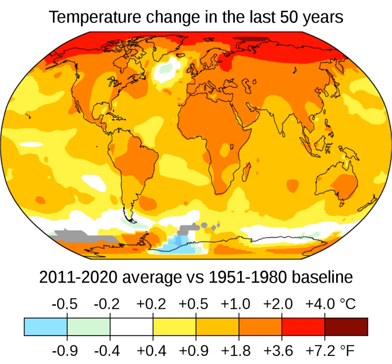Another key indicator is the cooling of the upper atmosphere, which demonstrates that greenhouse gases are trapping heat near the Earth's surface and preventing it from radiating into space. Regions warm at various rates. The pattern is independent of where greenhouse gases are emitted, because the gases persist long enough to diffuse across the planet. Since the pre-industrial period, global average land temperatures have increased almost twice as fast as global average surface temperatures, because of the larger heat capacity of oceans and because oceans lose more heat by evaporation. Over 90% of the extra energy in the climate system over the last 50 years has been stored in the ocean. The rest has heated the atmosphere, melted ice, and warmed the continents.